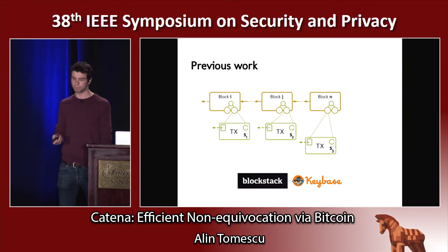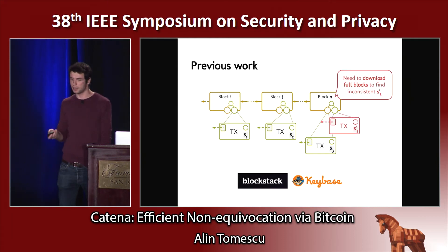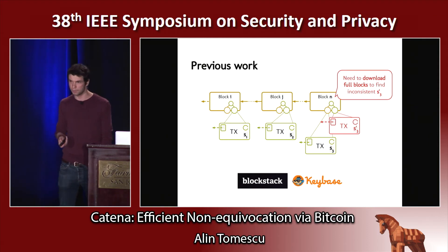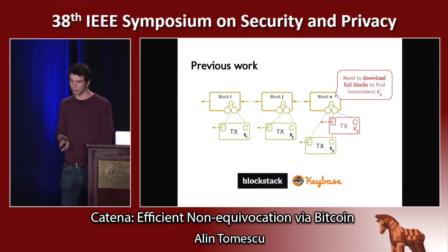The way previous work builds a log on top of Bitcoin is by just embedding statements in transactions, but they're unrestricted about how these transactions relate to one another. As a result, if I want to be certain that there's no S3 prime in the blockchain, I can't do any better than downloading full blocks to be sure I haven't missed it. I could ask a Bitcoin peer-to-peer node to filter the block for me, but that node might lie, or I would be vulnerable to Sybil attacks on the Bitcoin peer-to-peer network.